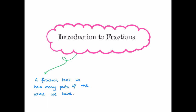A fraction tells us how many parts of a whole we have, and they're made up of two parts. The top number in the fraction is called the numerator — that tells us the number of parts that we have. Then the bottom number is called the denominator, and that tells us how many parts we're splitting the whole into.